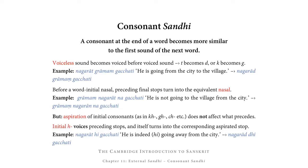However, initial H voices preceding stops, and this H itself turns into the corresponding voiced aspirated stop. For example, in 'Nagarāt hi gacchati' — 'he is indeed going away from the city' — we have Nagarāt followed by H at the beginning of hi. The T at the end of Nagarāt becomes voiced, so Nagarāt changes into Nagarād. And hi changes into the corresponding voiced aspirated stop corresponding to the dental sound at the end of the preceding word, giving Dhi. If the preceding word ended in a velar, the H would have become Gh, and so on.